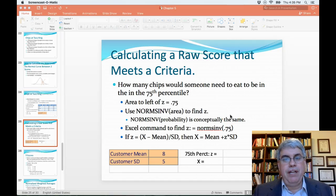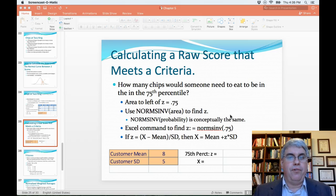Let's look at how we can calculate a raw score that meets some criteria, such as the score that's in the 75th percentile or the score that's in the 10th percentile. So continuing our study of the five girls who eat chips, we want to know how many chips would someone need to eat to be in the 75th percentile.